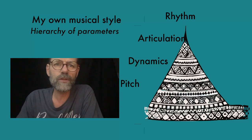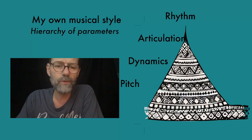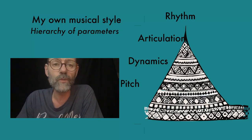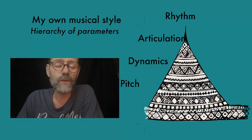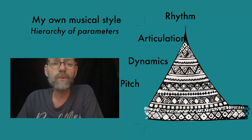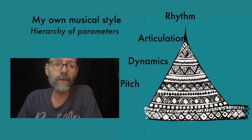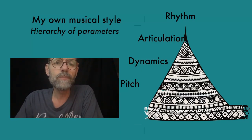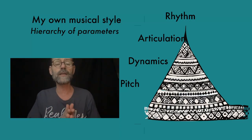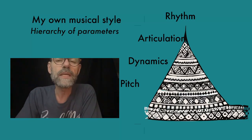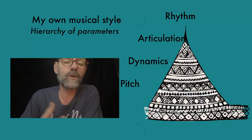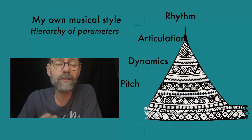Let's now dive into how to teach the computer to improvise our specific kind of music. To do this, we must align what we hear as humans with what the computer should hear. What parameters matter most in my own musical style? In order of importance, I'd say: rhythm, articulation, dynamics and pitch. Although it's varying overall, there is a hierarchy between which parameter is important. A central characteristic of this specific genre of music is that there is a variation in what importance each parameter has locally and the way they are combined.